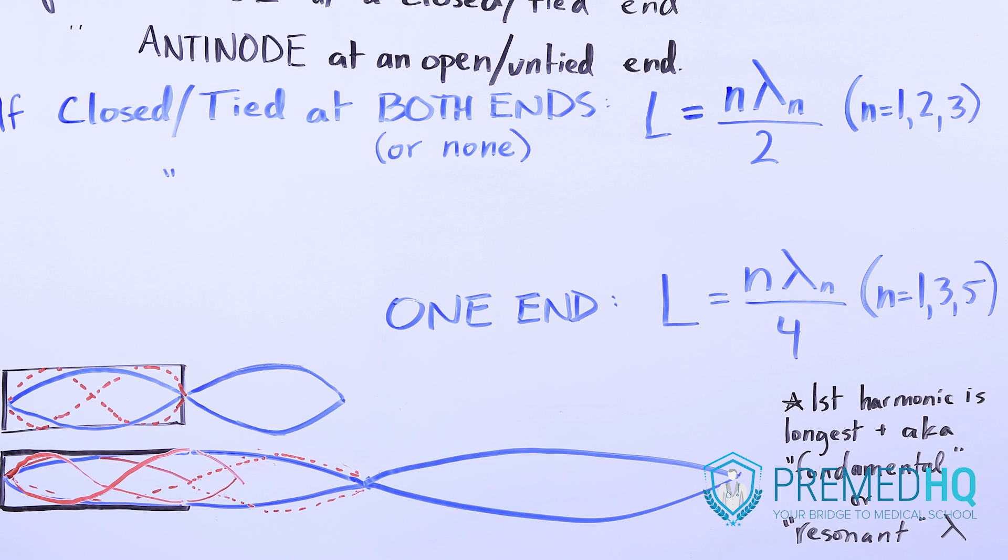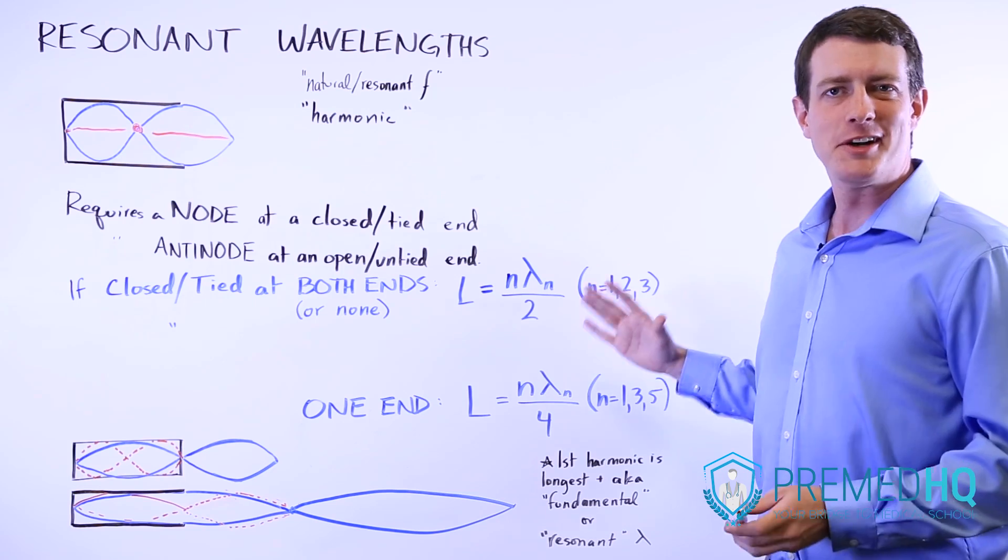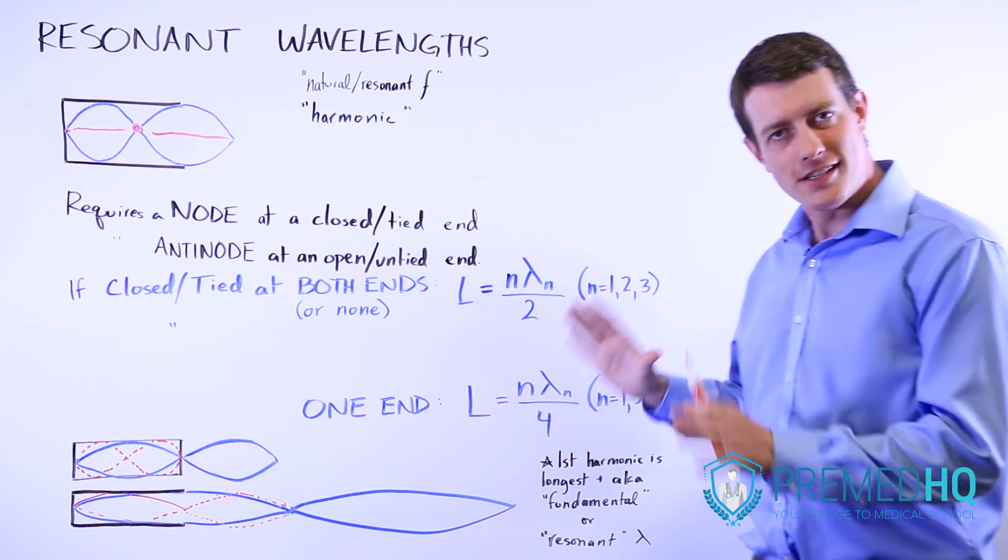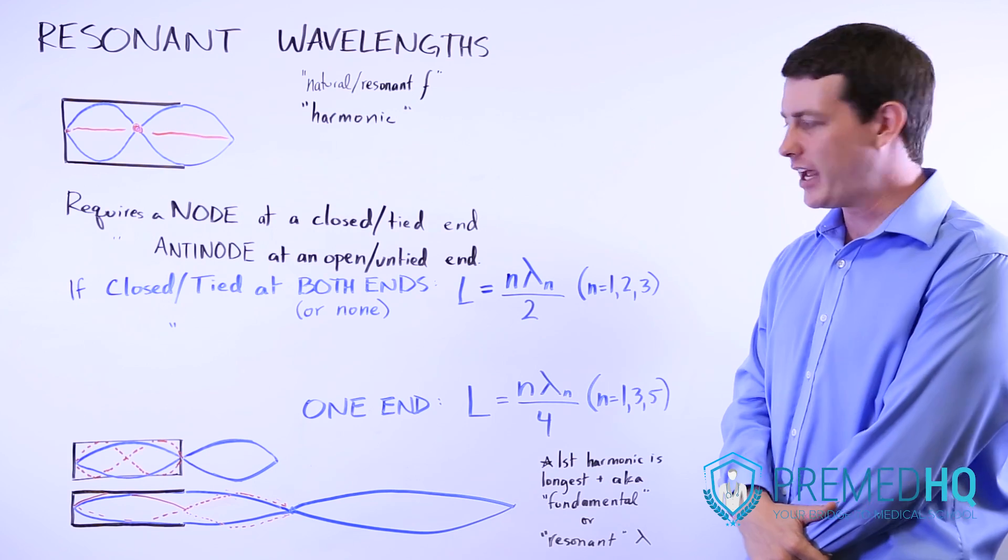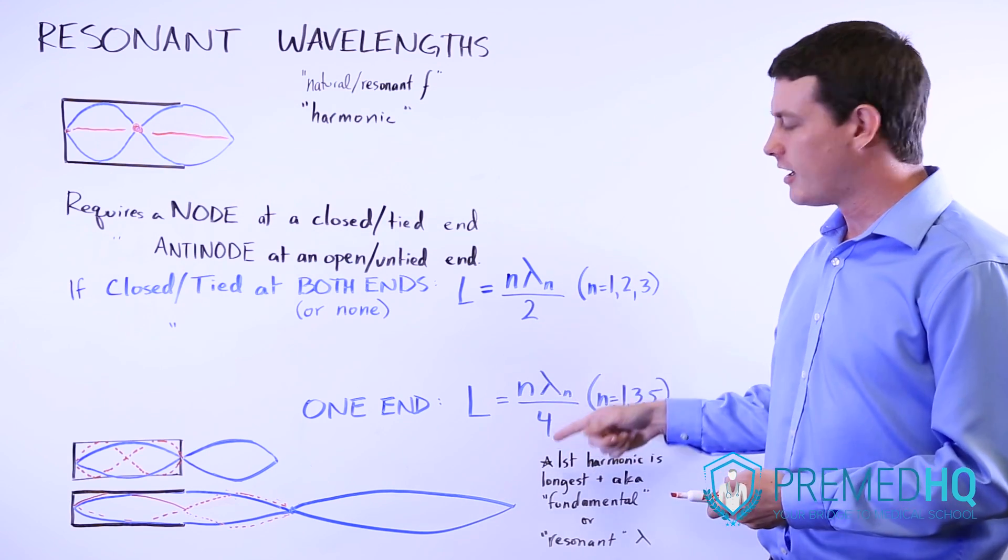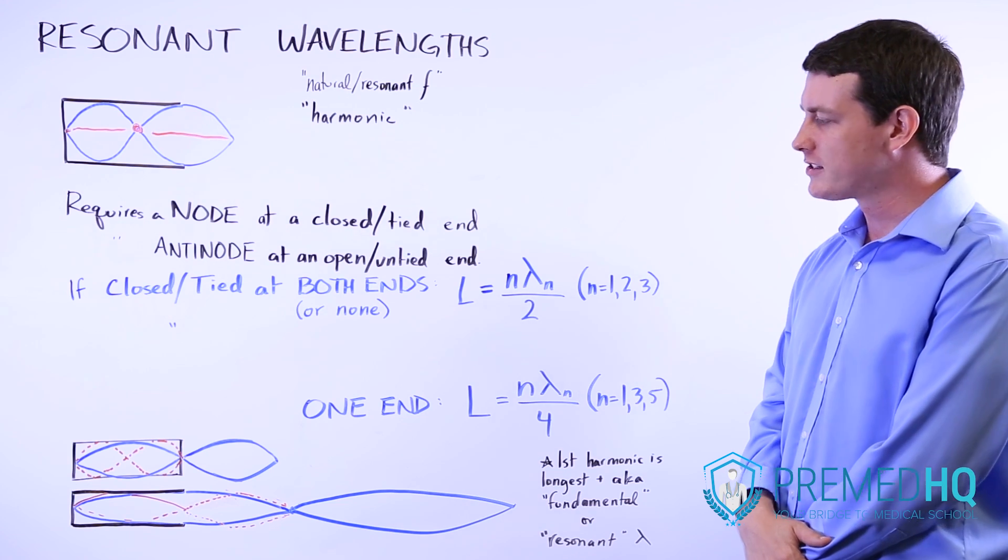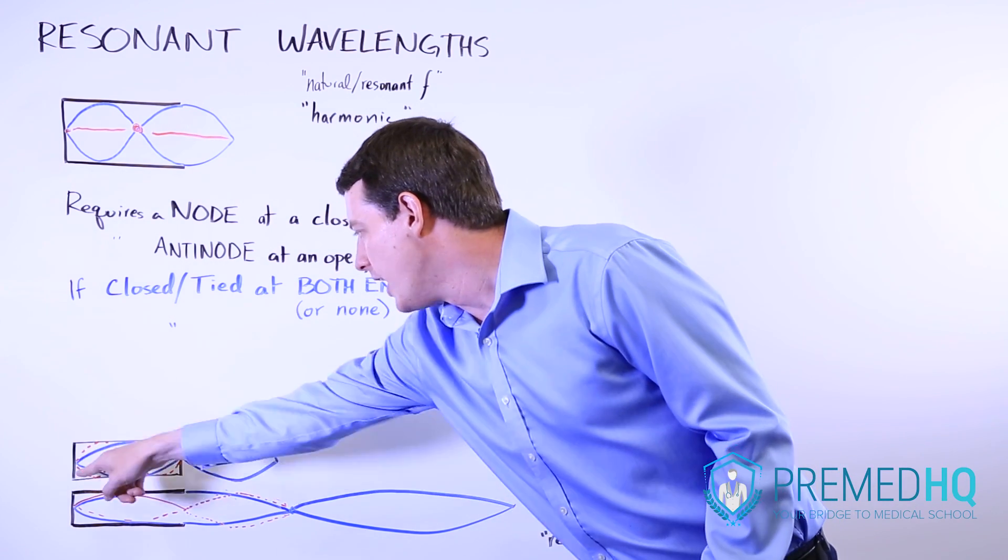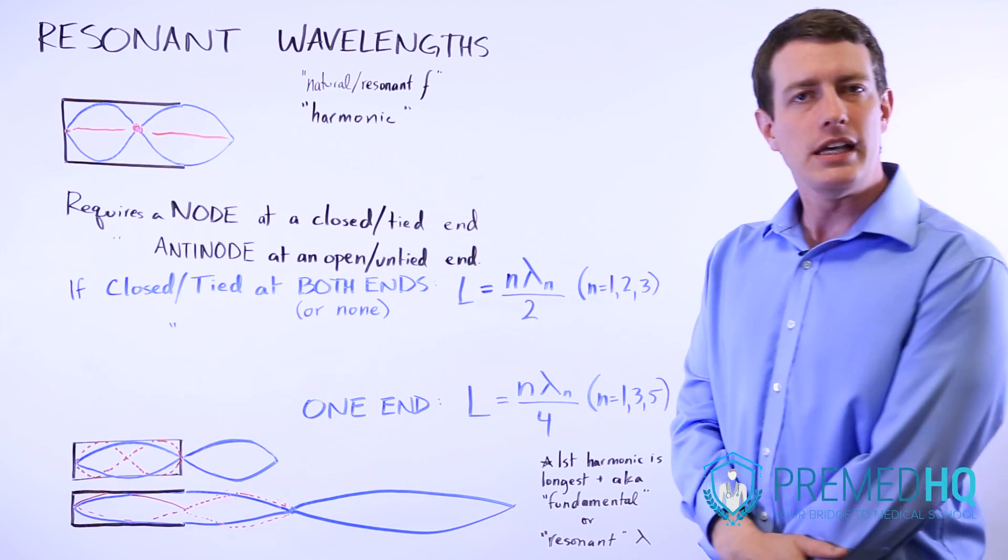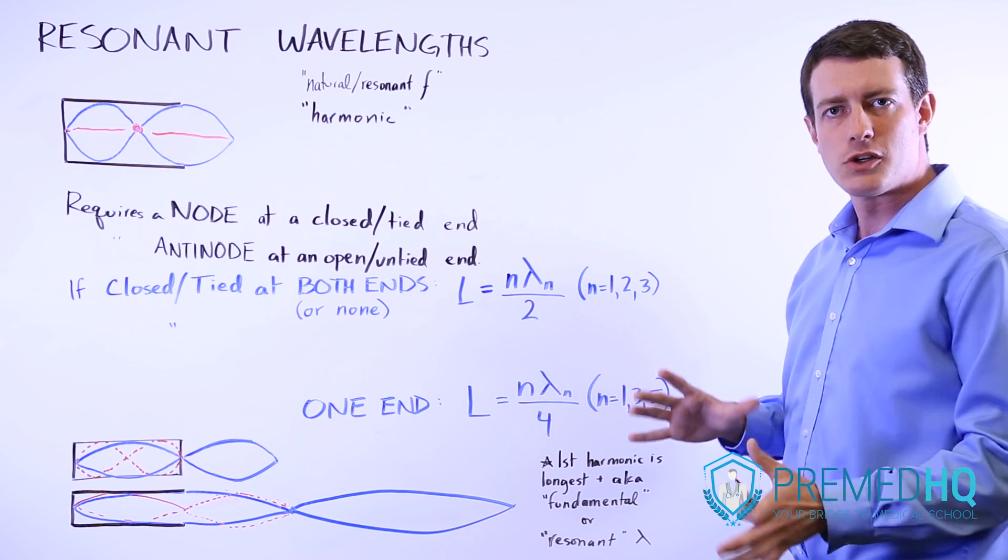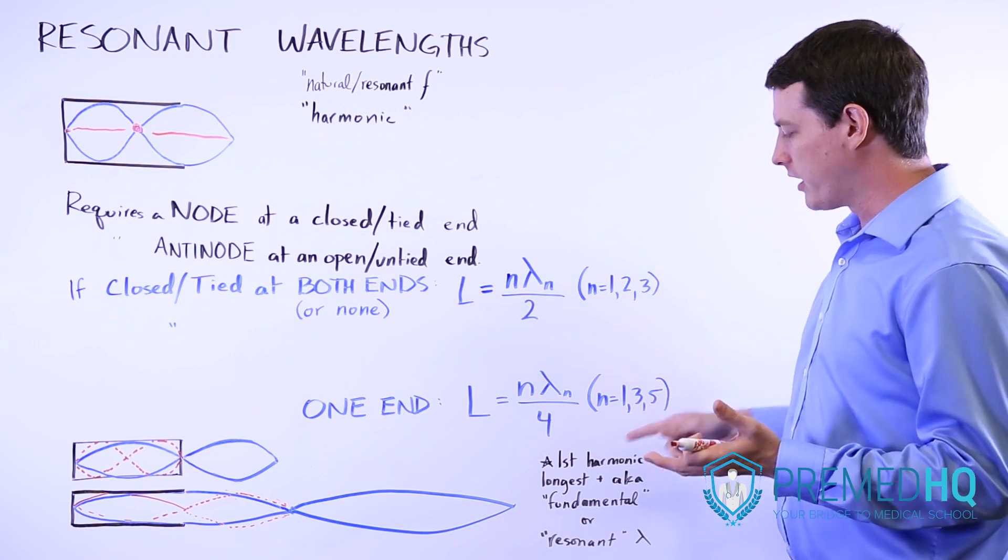At first glance, these formulas may seem somewhat random and counterintuitive, but I've drawn two illustrations here to show you that there actually is a reasoning behind them. And this can also help you remember them if you're forgetting which denominator you should use for each one. And so let's remember that if it has a closed end at both sides, then what you need is a node at both sides. And so the longest wavelength that satisfies those requirements, the longest harmonic,